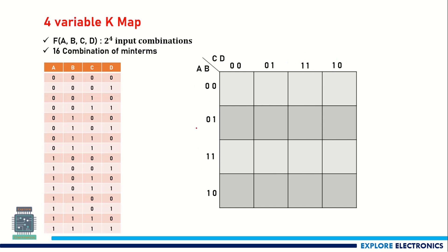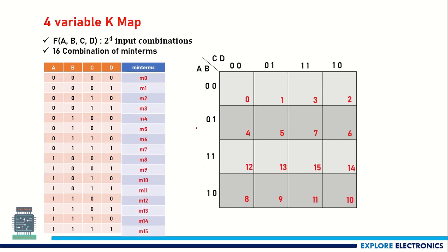The cell values become 0, 1, 3, 2, 4, 5, 7, 6, 8, 9, 10, 11, 12, 13, 14, 15. The reason for taking the order 00, 01, 11, 10 was explained in the previous video — you can visit that video to understand the reason.